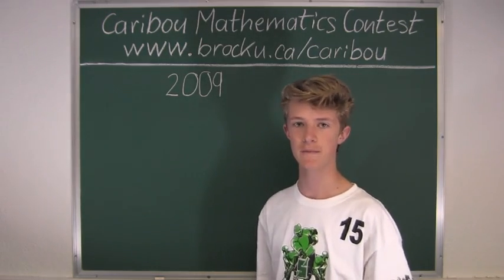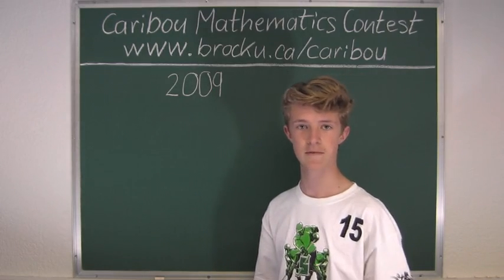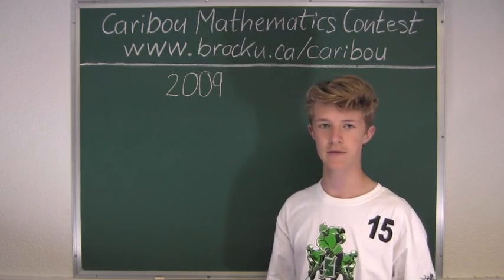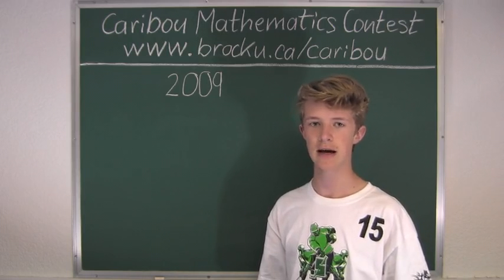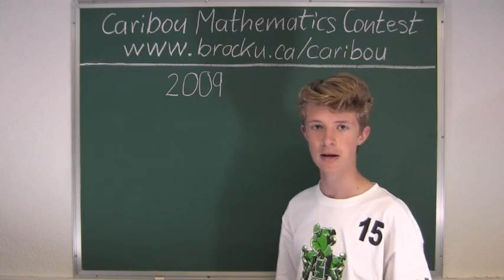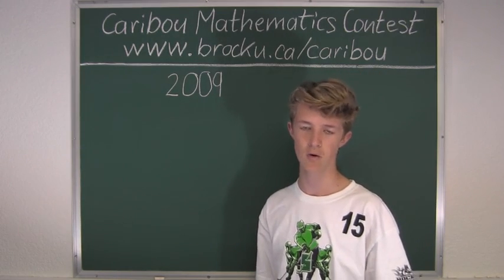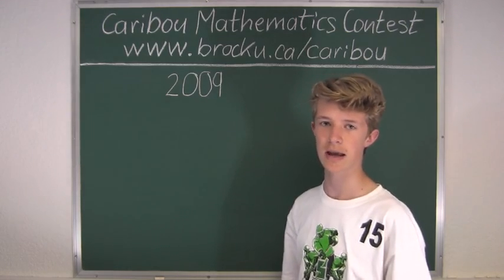So now let's try 3. To find out if any number is divisible by 3, all you have to do is add up the digits and then divide by 3. So 2 plus 0 plus 0 plus 9 is 11, 11 divided by 3 is not a whole number. So we know it can't be 3.